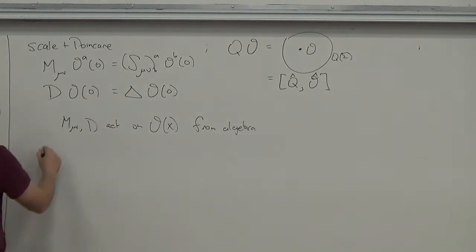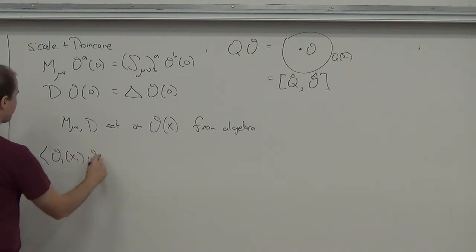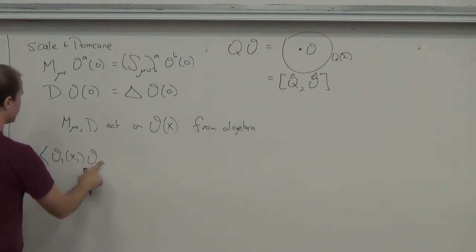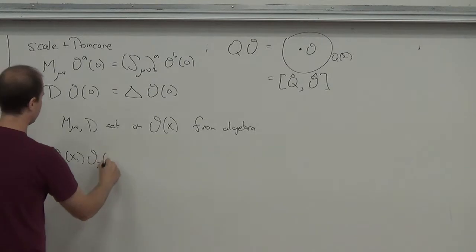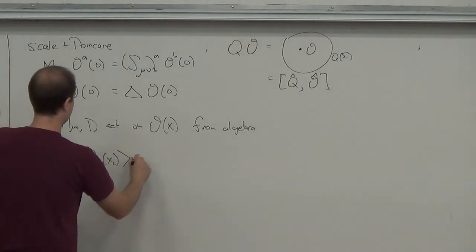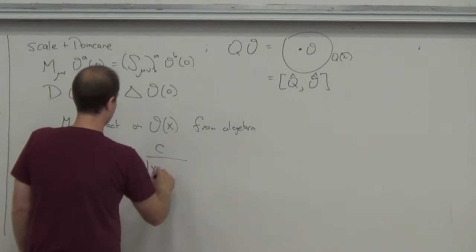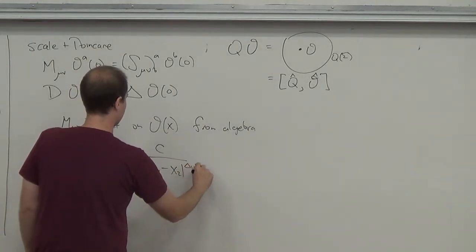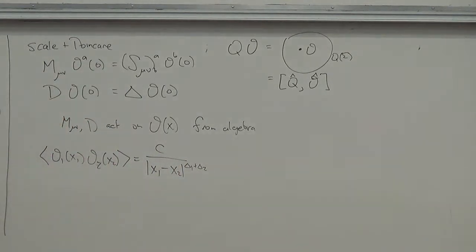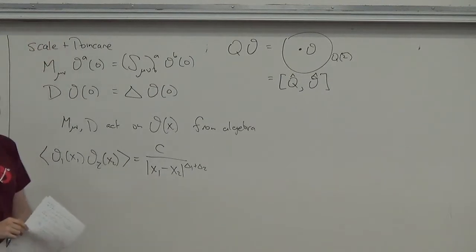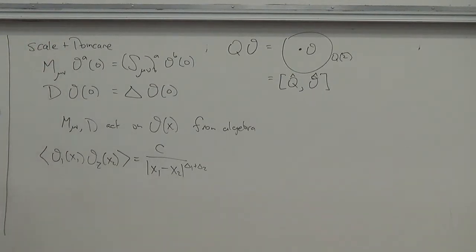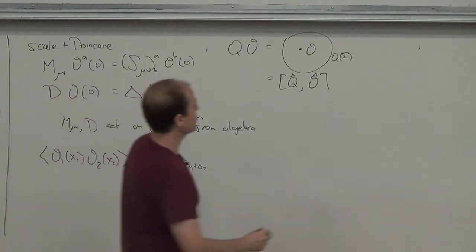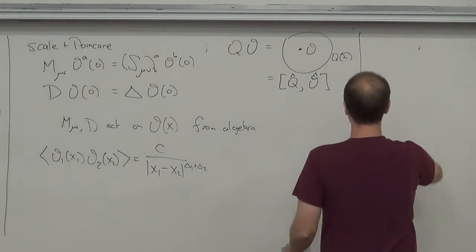This led us to a Ward identity for a two-point function of operators in a scale invariant theory, which we solved to find power law behavior. So far we've used only a subset of the available symmetries. The next step is to use the rest of the symmetries and see what they give us.